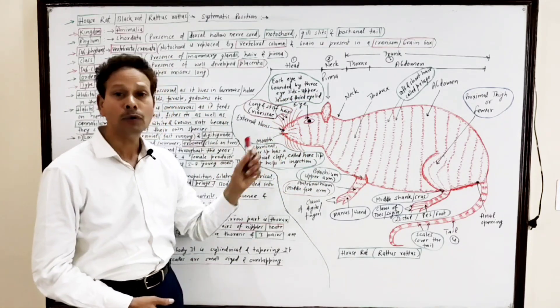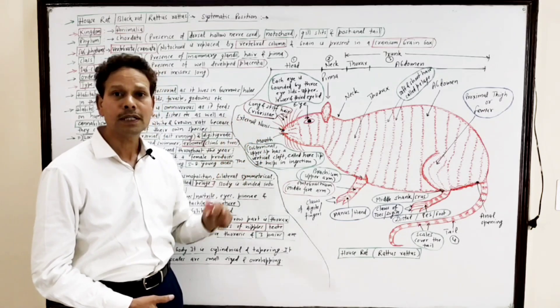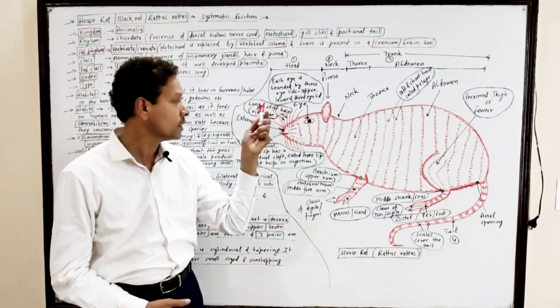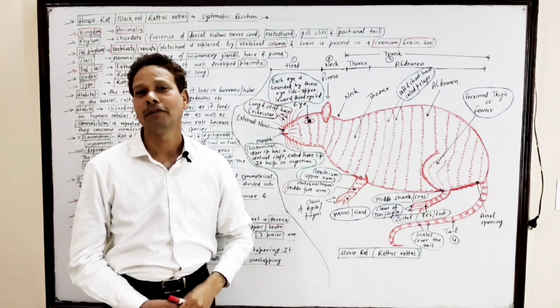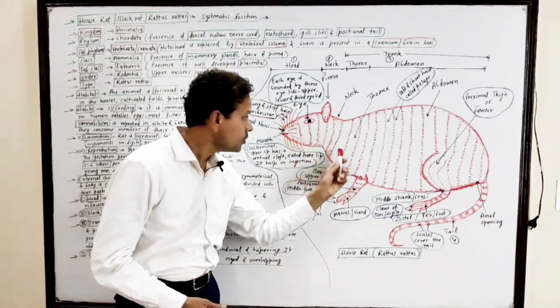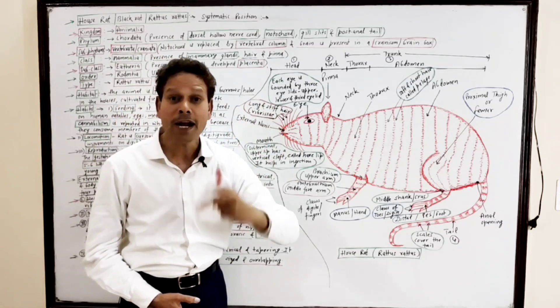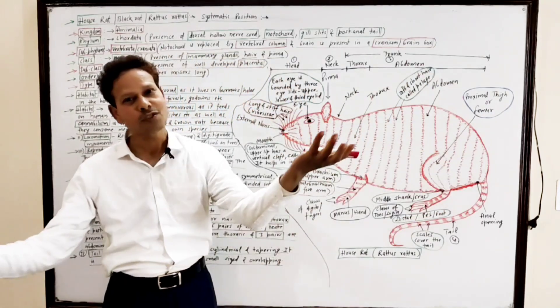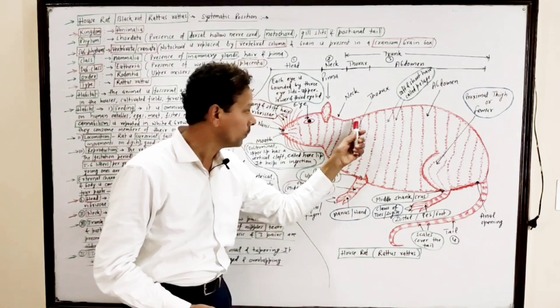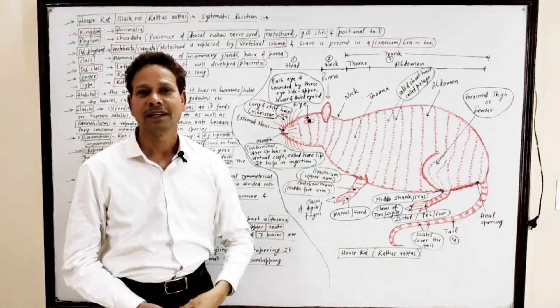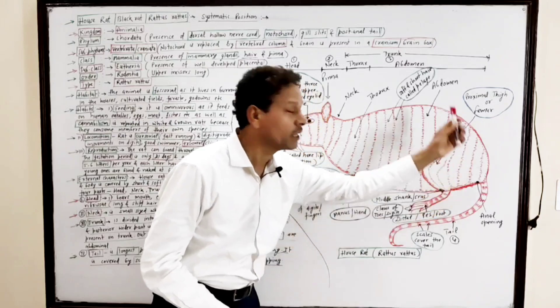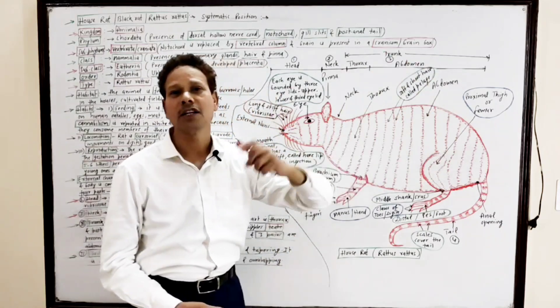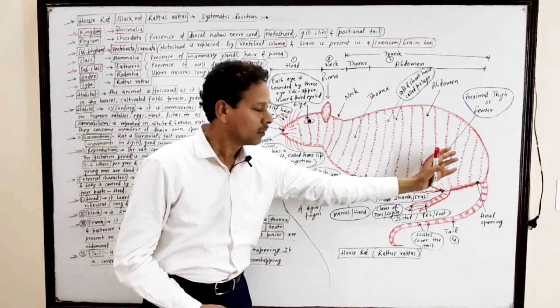This small movable part is neck, which provides mobility to head region. The maximum part of body is trunk, and the trunk is divided into the anterior narrow part, the thorax, and the posterior broader part, the abdomen.